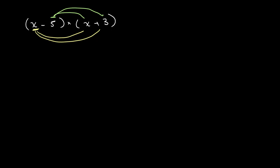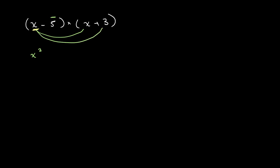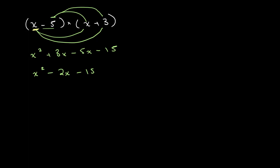So let's work this out. x times x gives us x squared, then x times 3 is plus 3x. Then we have negative 5 times x, which is minus 5x. And then negative 5 times 3 gives us minus 15. We can simplify this to x squared minus 2x minus 15.